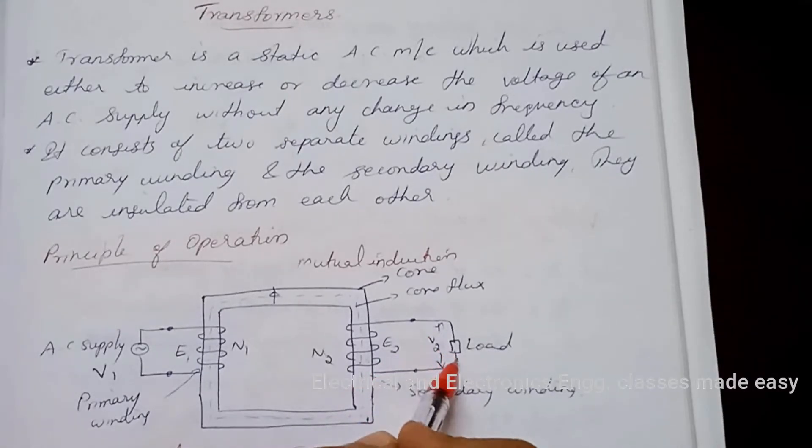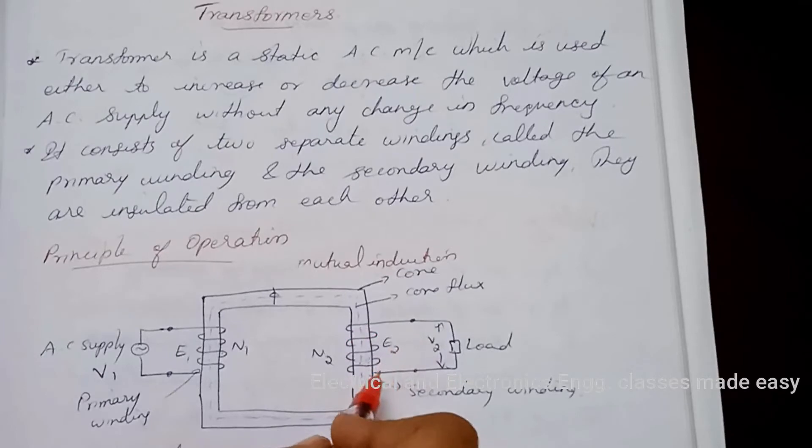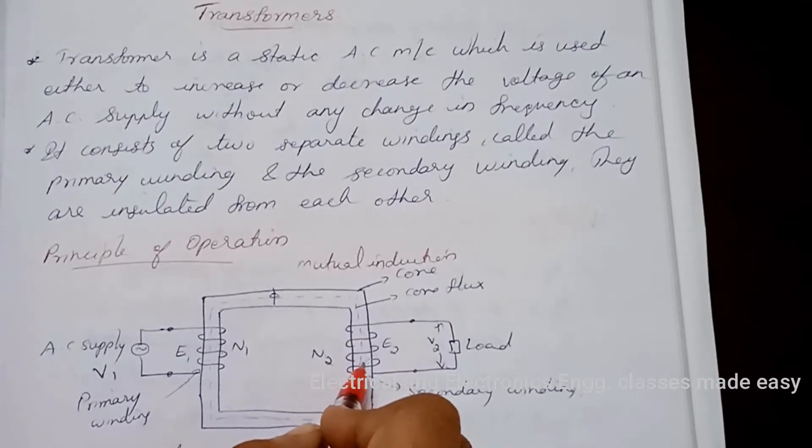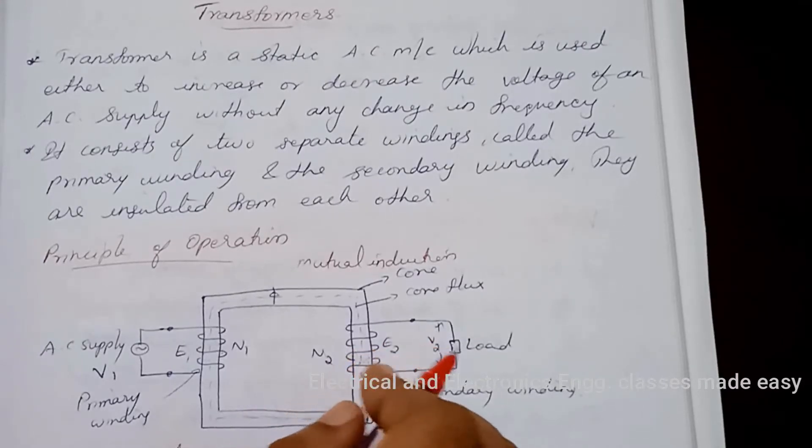When the number of turns in the secondary winding is more than that in the primary winding, it is called the step-up transformer. And when the number of turns in the secondary winding is less than that in the primary winding, it is called step-down transformer.